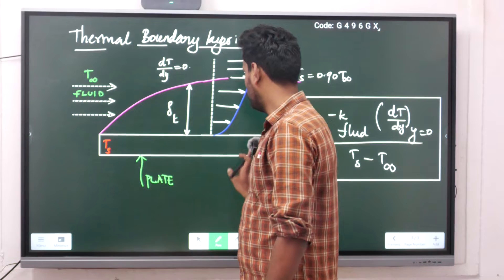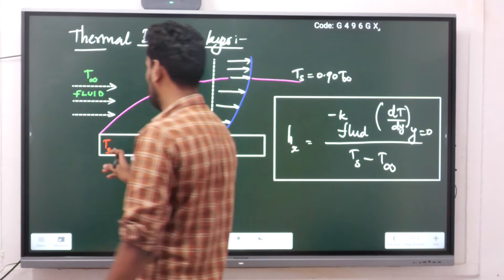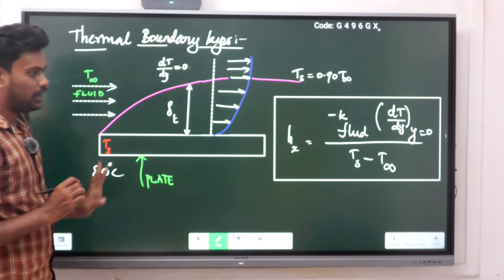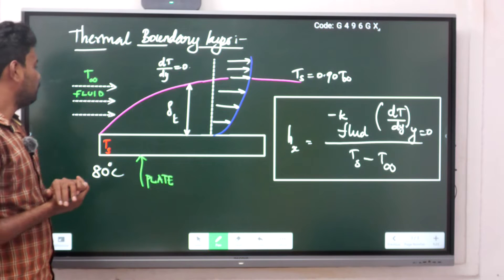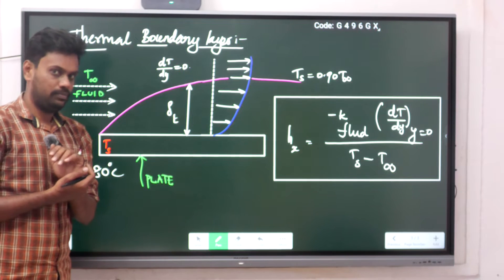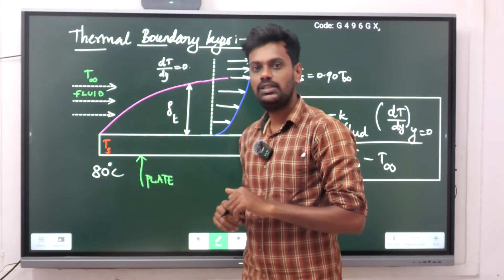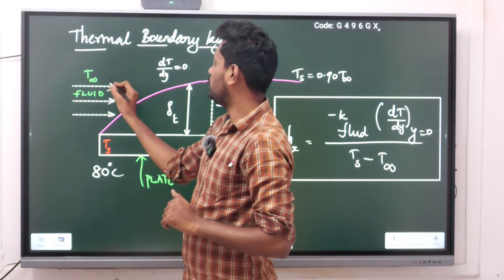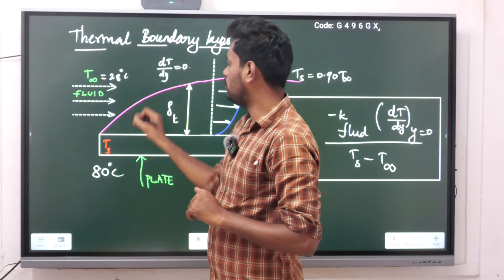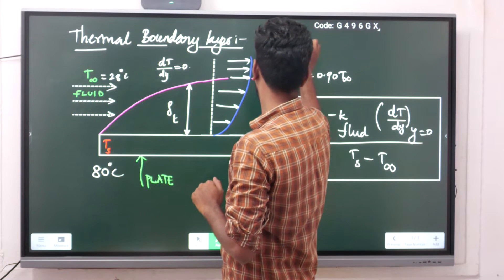For a better example, I have taken one plate — this is a plate clearly mentioned in the picture. This plate is at a temperature Ts. For better understanding, let us take Ts = 80°C. The air or liquid flowing over the flat plate has a temperature T∞. Let us take T∞ = 28°C. So from here it is clearly understandable that Ts is greater than T∞.